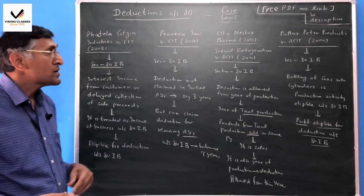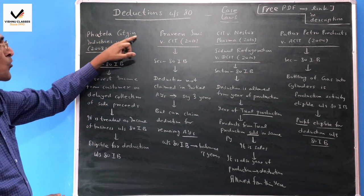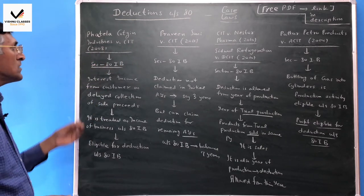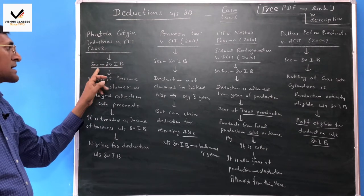Next case is Hotel of Origin Industries versus CIT 2008. This is also related to section 80IB.